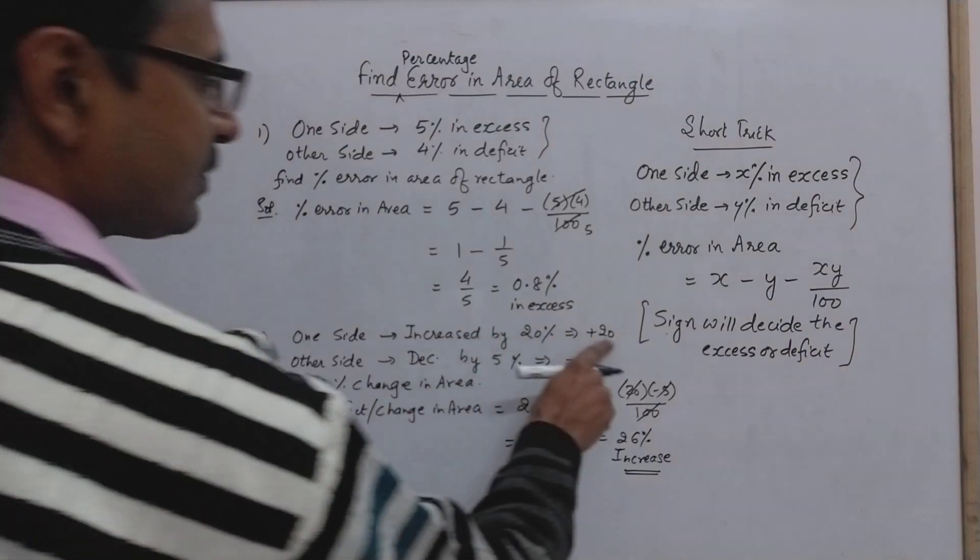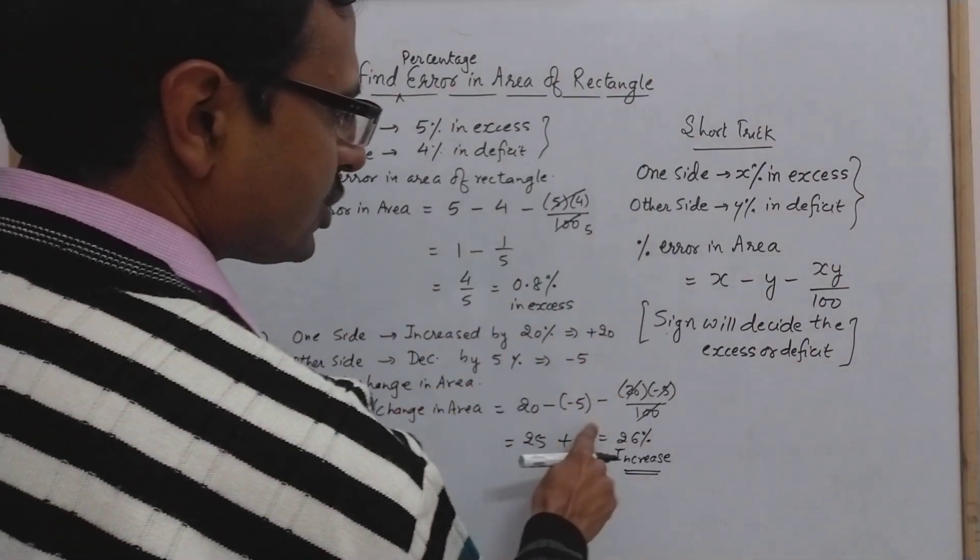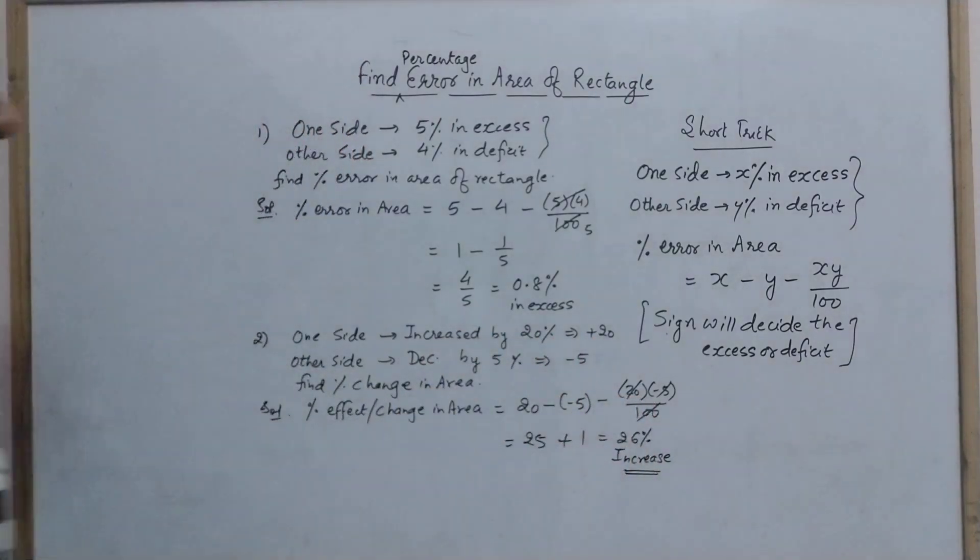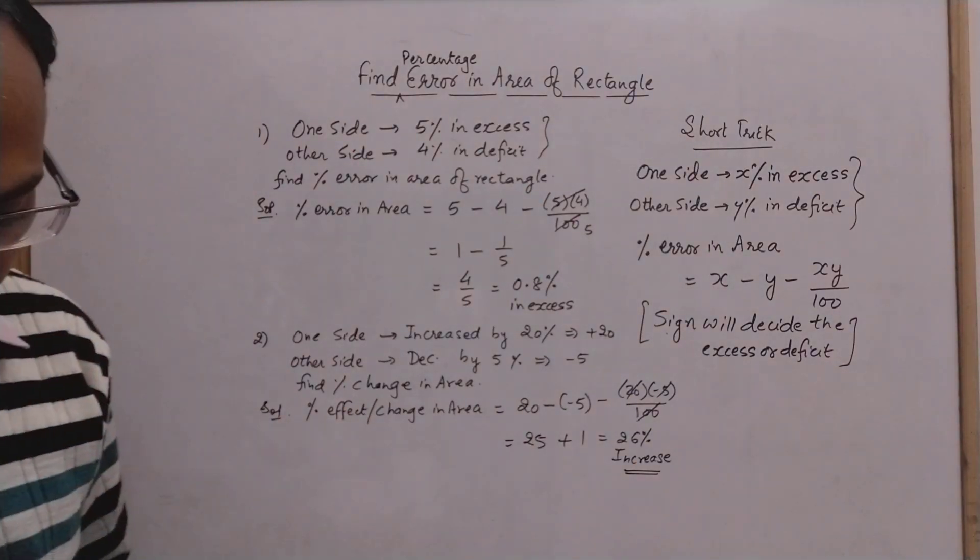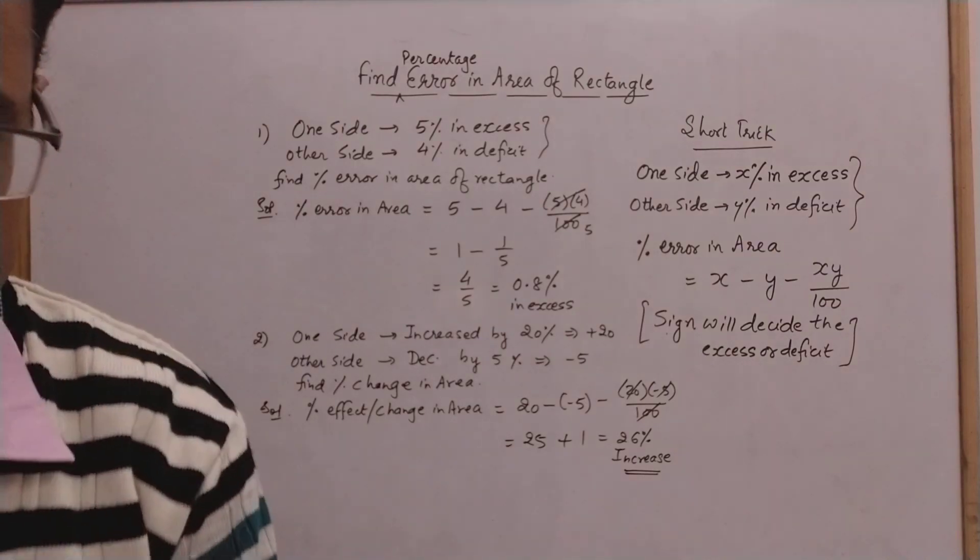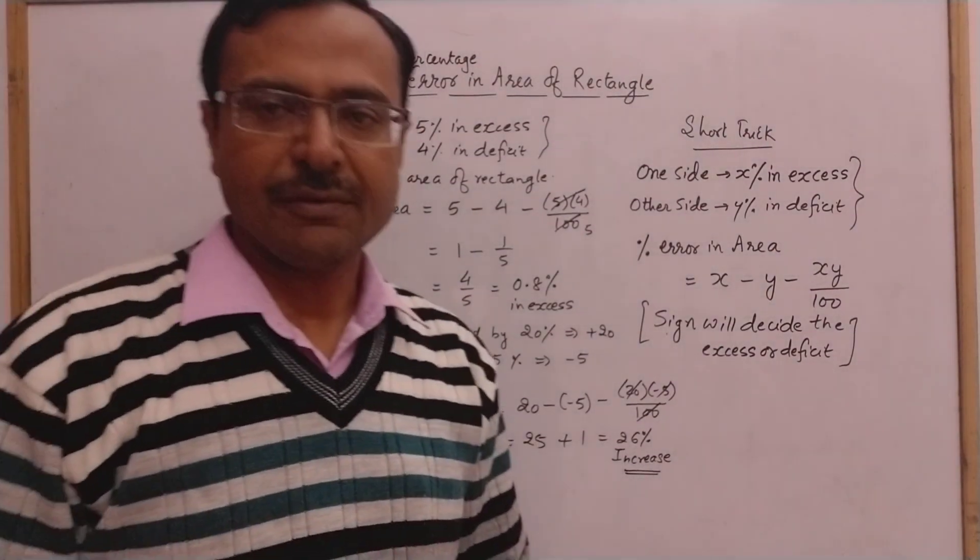Increase is to be taken as positive and decrease is to be taken as negative, and then substituted here to give you the correct answer. But in case of error you can do it directly. Just take the sign and you will be there with the answer.